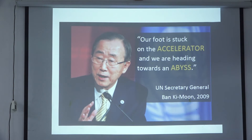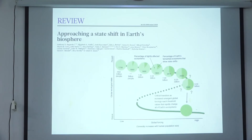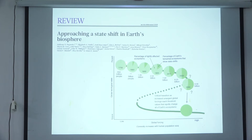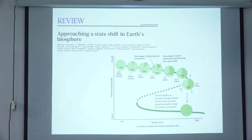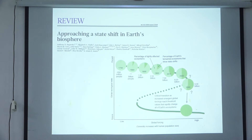Approaching a state shift in Earth's biosphere — Barnosky and co-authors: the percentage of lightly affected ecosystems is becoming increasingly impacted from the year 1700. Projections to 2025 show we would have impacted more than 50% of ecosystems. By 2045, when we are 9 billion people, we are worried about the critical transition as increased emergent global forcings reach threshold values that rapidly change all of Earth's ecosystems. These papers are published in Science, Nature, Science Advances, and PNAS.